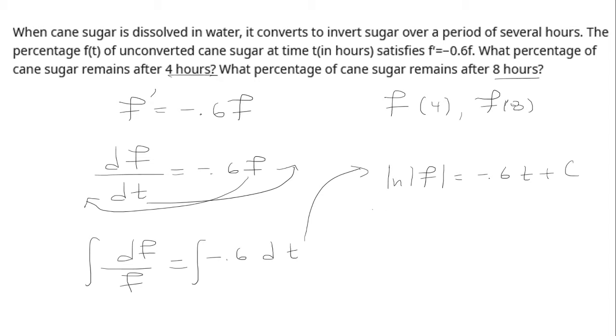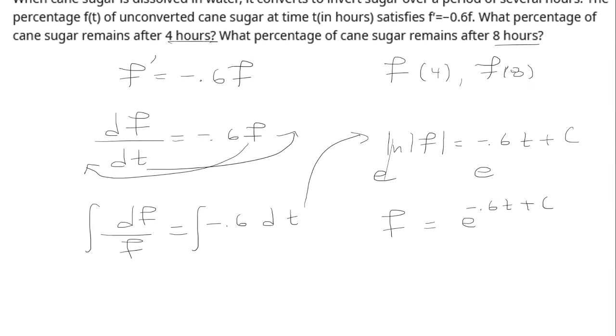I want to get rid of the natural log, so I'm going to do e to both sides. So the e and the natural log cancel out and f comes out and you have e to negative 0.6t plus c. Now I'm able to remove the absolute value because e is always going to be positive. So I don't have to worry about it ever being negative.